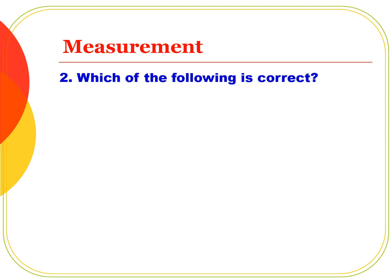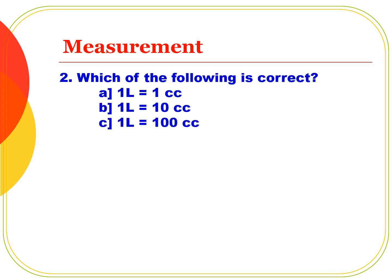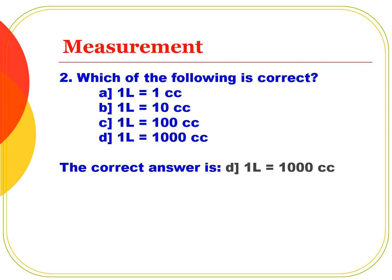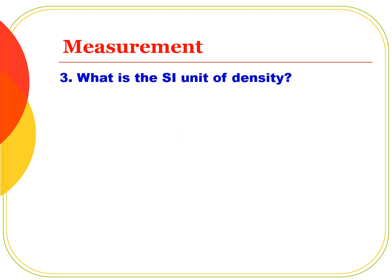Second question: Which of the following is correct? Option A: 1L = 1 cubic centimeter. Option B: 1L = 10 cubic centimeter. Option C: 1L = 100 cubic centimeter. Option D: 1L = 1000 cubic centimeter. The correct answer is Option D — 1 litre is equal to 1000 cubic centimeters.